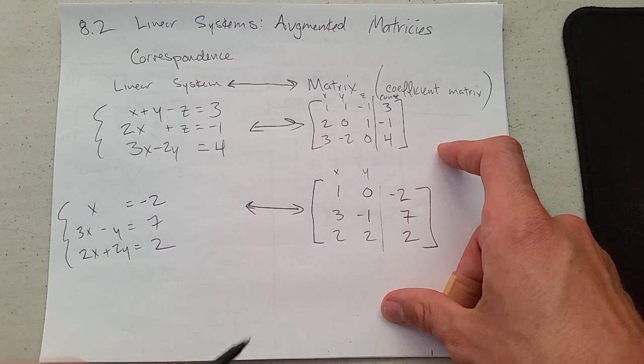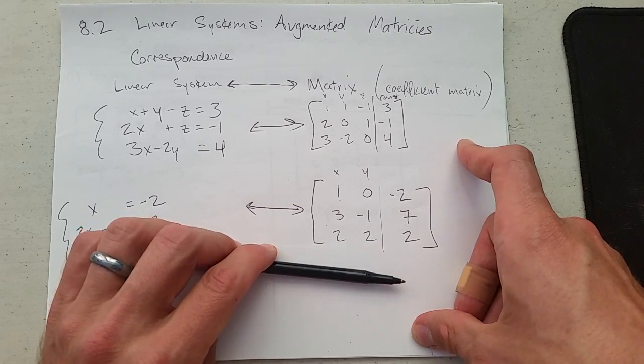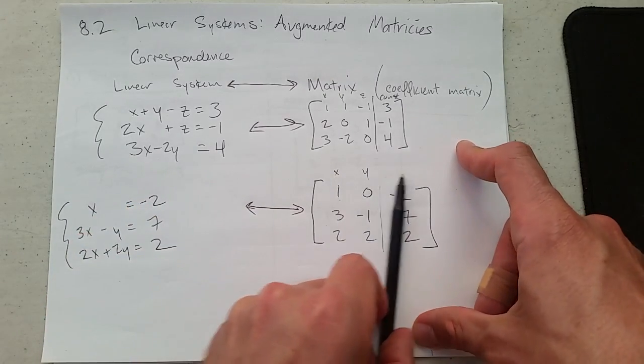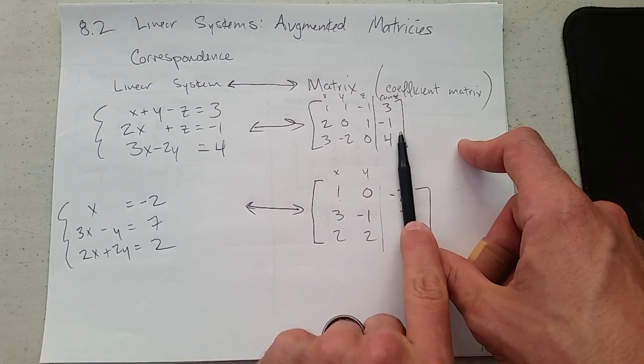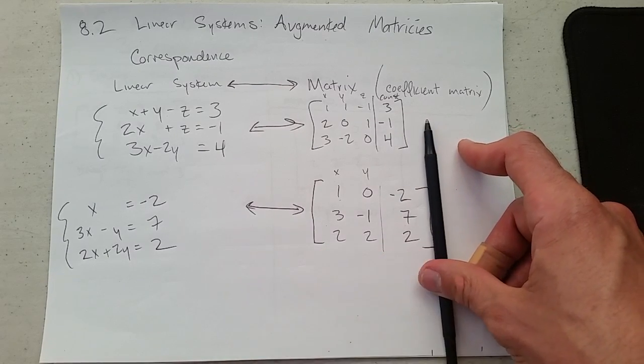Now how did I know there was three equations? There's three rows. How did I know there was two variables? There are three columns, but remember your last column is a constant column. So there's really two variable columns, one constant column.